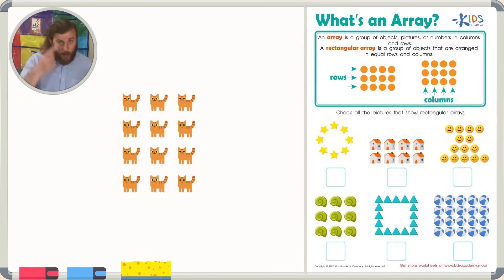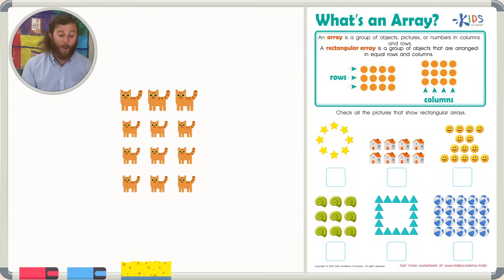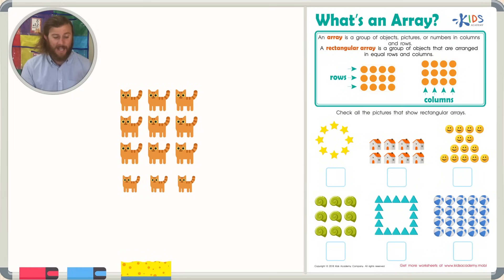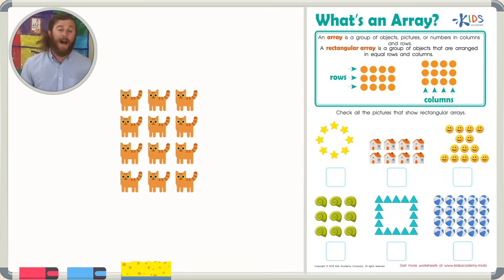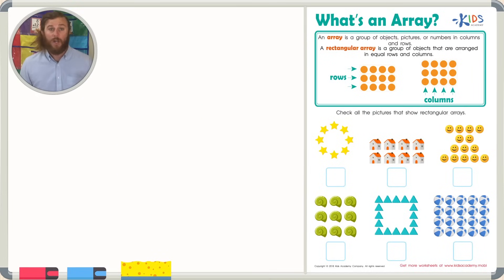And to find out how many there are in total, we can just count up all of our cats. Let's count them up: one, two, three, four, five, six, seven, eight, nine, ten, eleven, and twelve. Putting objects in arrays makes them easy to count and also will help with multiplication later on.